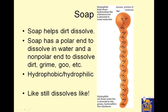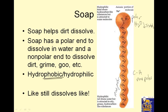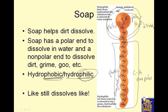Soap helps dirt dissolve. Soap has a polar end — the polar end is right here, notice the negative part — a polar end to dissolve in water. And a nonpolar end — C's and H's are nonpolar — this is called a nonpolar tail. It has a polar end to dissolve in water, so H2O dissolves, and a nonpolar end to dissolve dirt, grime, goo, etc. Hydrophobic means afraid of water — that's the phobic part — and hydrophilic means love of water. This part will dissolve in water, this part will dissolve the funk, and you just rinse it away. It doesn't make grime disappear; it just gets it into the water.